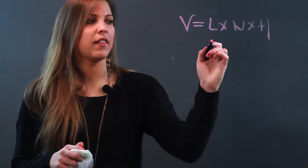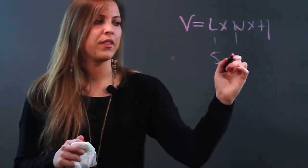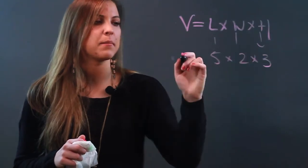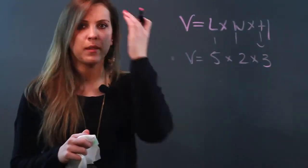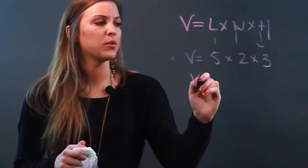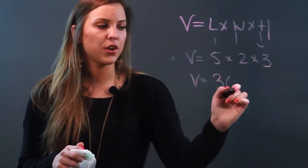So if I'm given that the length is 5, the width is 2, and the height is 3, just as an example, all I'm doing is multiplying them straight across. So I have 5 times 2 is 10. 10 times 3 is 30.